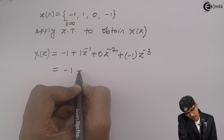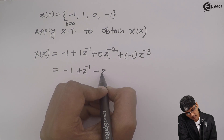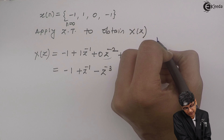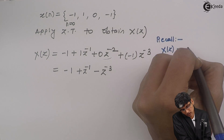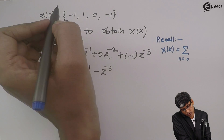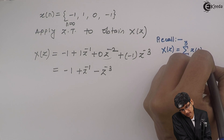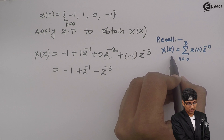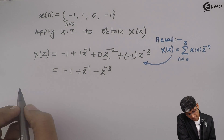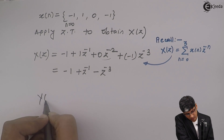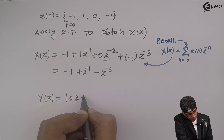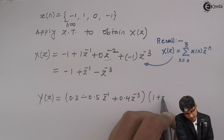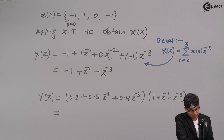Rewriting, X(z) = -1 + z⁻¹ - z⁻³. To recall, X(z) = summation from n=0: x(n)·z⁻ⁿ, putting in the values gives this answer. Now we have X(z) and H(z). To obtain Y(z) we multiply them: (0.2 - 0.5z⁻¹ + 0.4z⁻³) into (-1 + z⁻¹ - z⁻³).